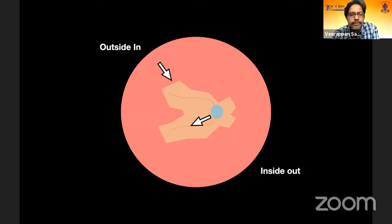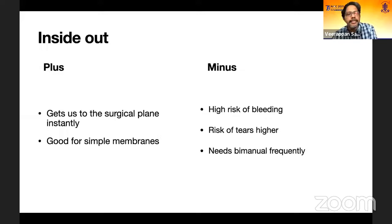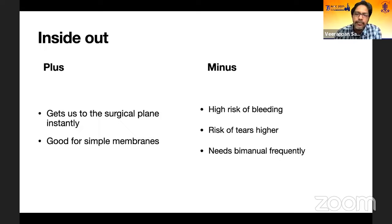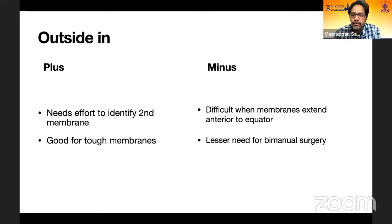There are two approaches: reaching the membranes from outside-in, or from inside-out — from the disc towards the periphery. I feel that for more complicated membranes, it's better to go from outside-in. For simple membranes, you can open at the disc because it gets you to the surgical plane immediately, though there is a higher risk of bleeding because you may rupture major neovascular fronds at or near the disc. Once the membrane becomes loose, you may need to go to a bimanual technique. Outside-in is much easier for complicated membranes; the only issue is that getting the initial edges is a little bit difficult.